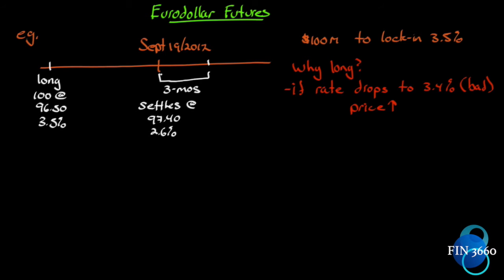Let's say between two banks: Bank One will have an extra hundred million dollars, Bank Two wants the hundred million, and they look in the market and the interest rate now is 3.5%. If they enter into a Eurodollar futures contract now, they can lock in 3.5%. So it's a hundred million dollars — the long position takes 100 contracts at 96.50, because that's the current futures price, which implies an interest rate of 3.5%. Remember, it's 100 minus R. That just tells us the interest rate of 3.5%.